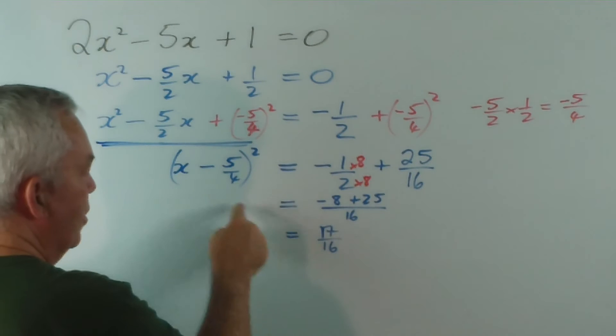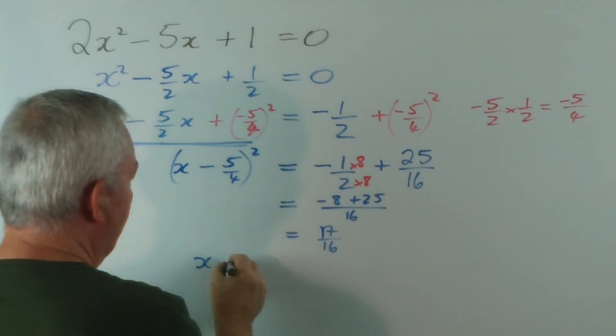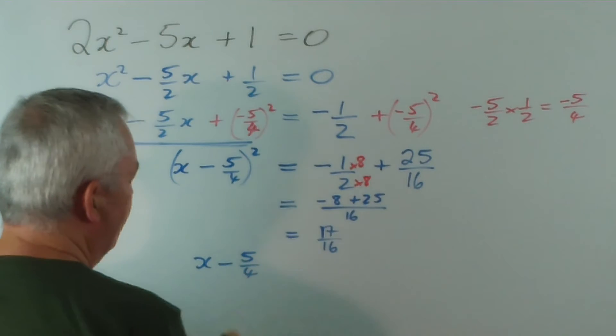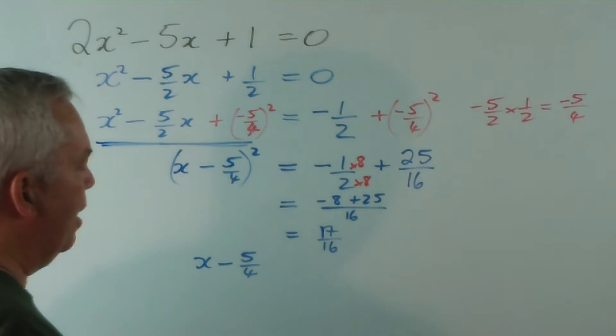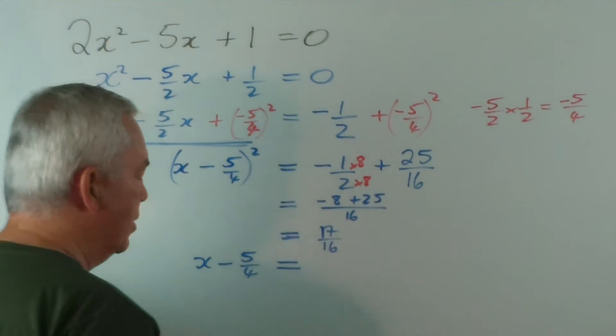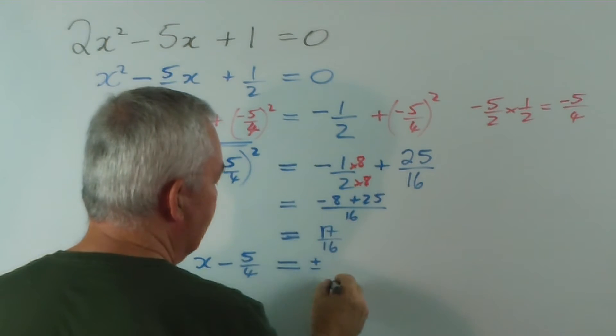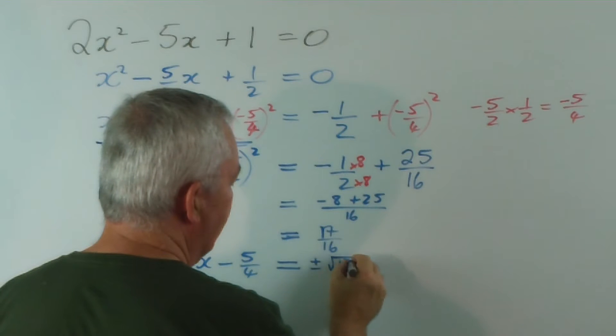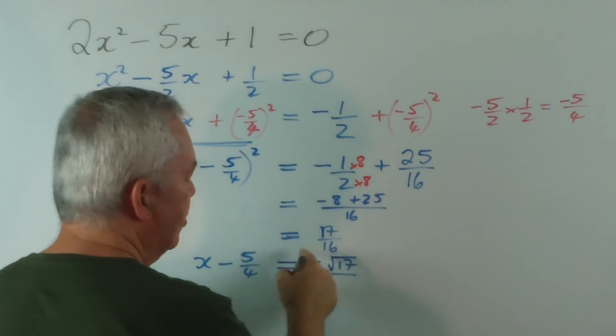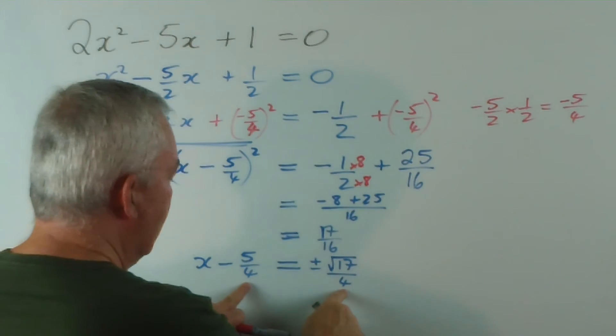Now we take the square root of both sides. The square root of this, x minus 5 on 4, I will show you in other videos the proper way of doing this, this is a little bit of a fudge that pretty well every school textbook uses, and the square root of this, we write plus or minus the square root of 17 over, and the square root of 16 is 4. And you should have the same denominator.